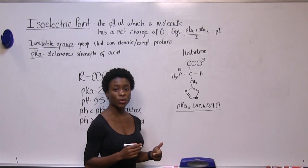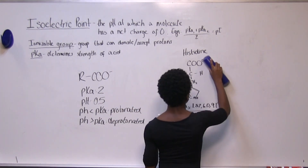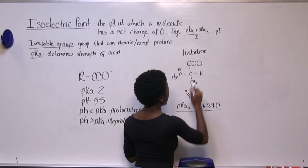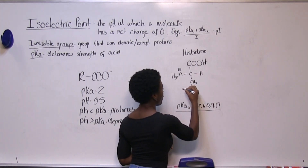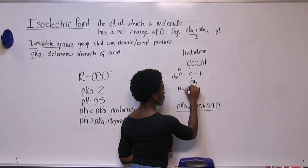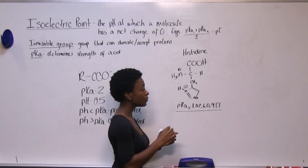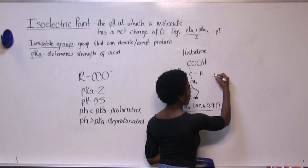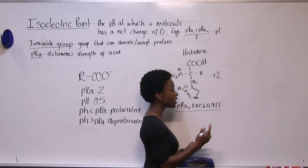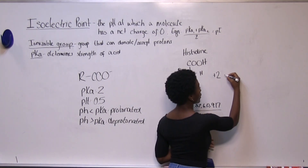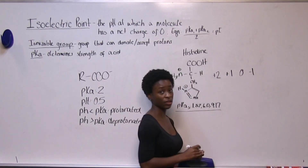First we're going to want our molecule in a completely protonated form — we drop it in a really acidic solution. We add a hydrogen there and a hydrogen here, giving a plus charge, so our molecule goes from a neutral charge to about a plus two charge. And we're going to write all the charges we'll see as we increase the pH past zero: plus two, plus one, zero, and negative one.